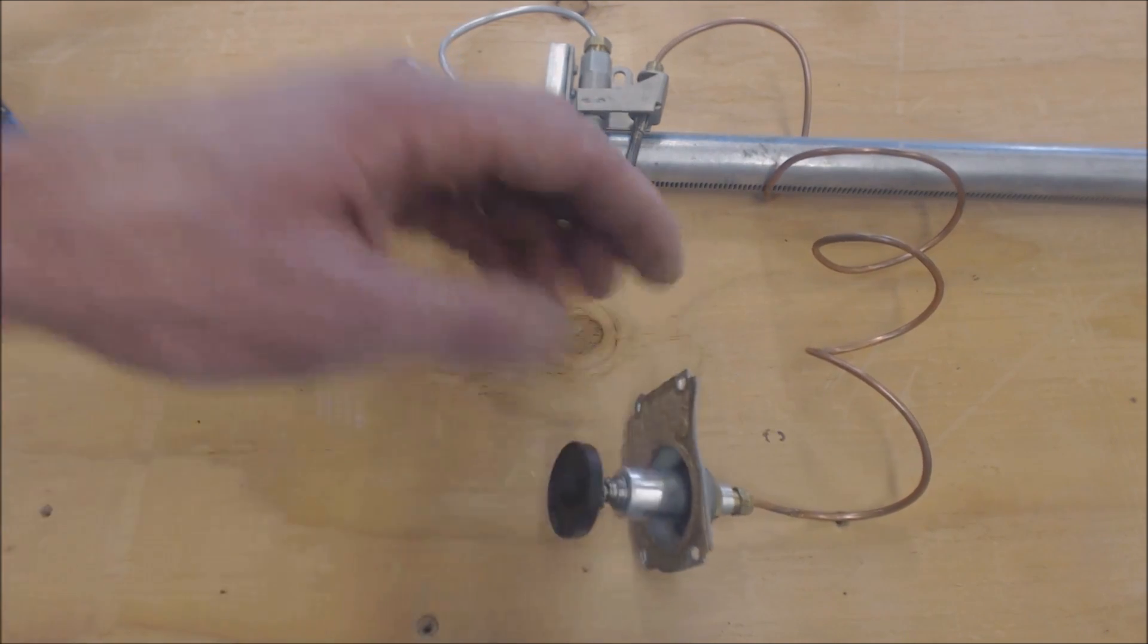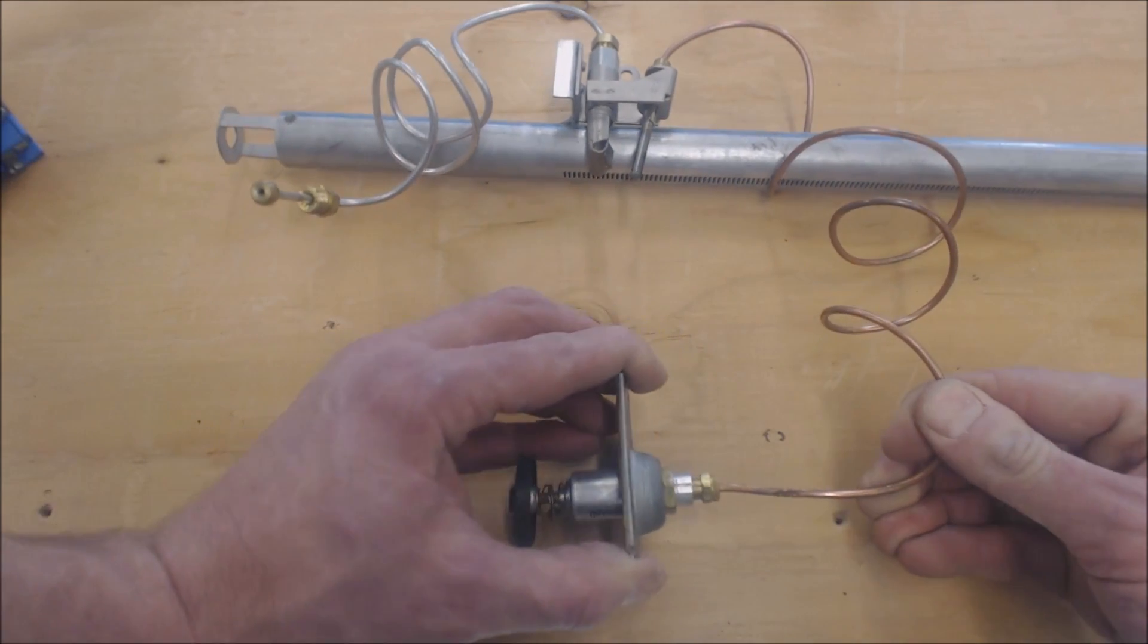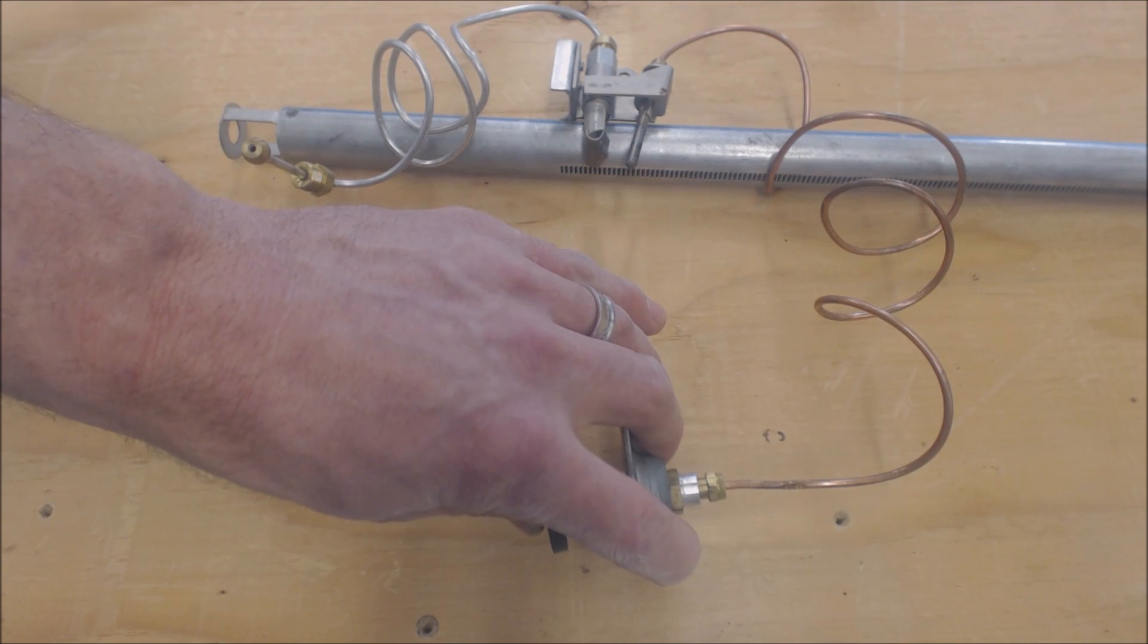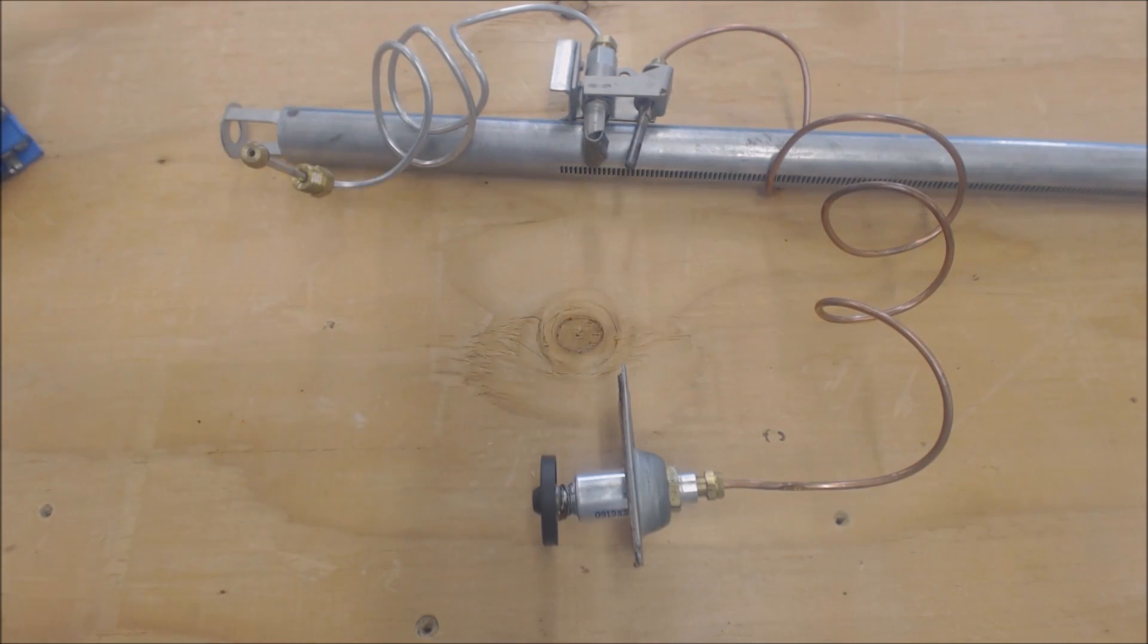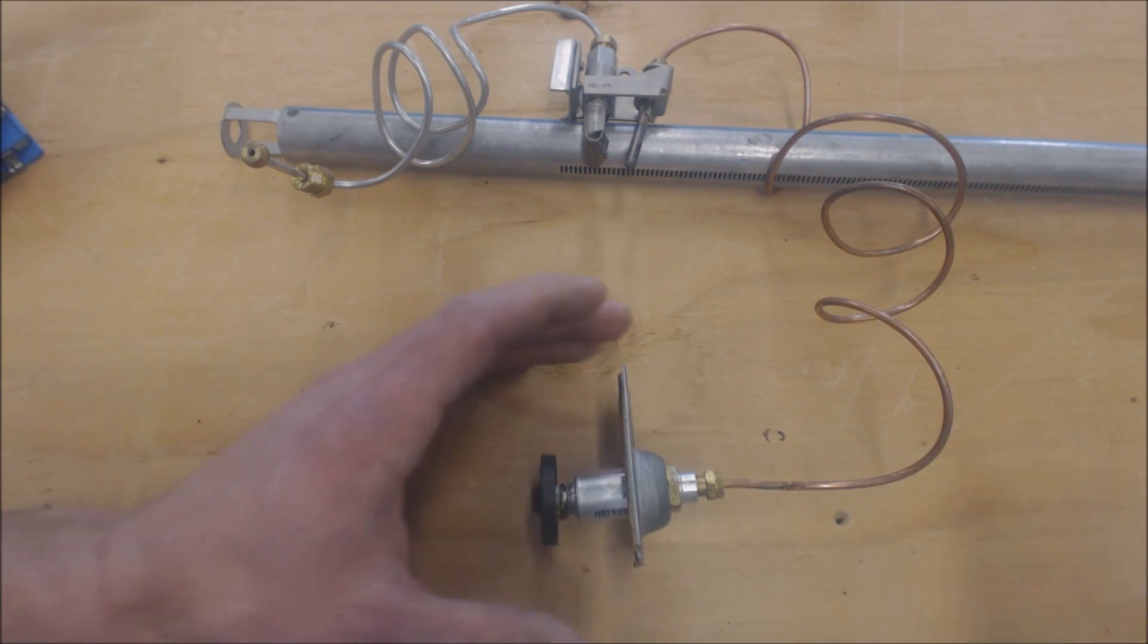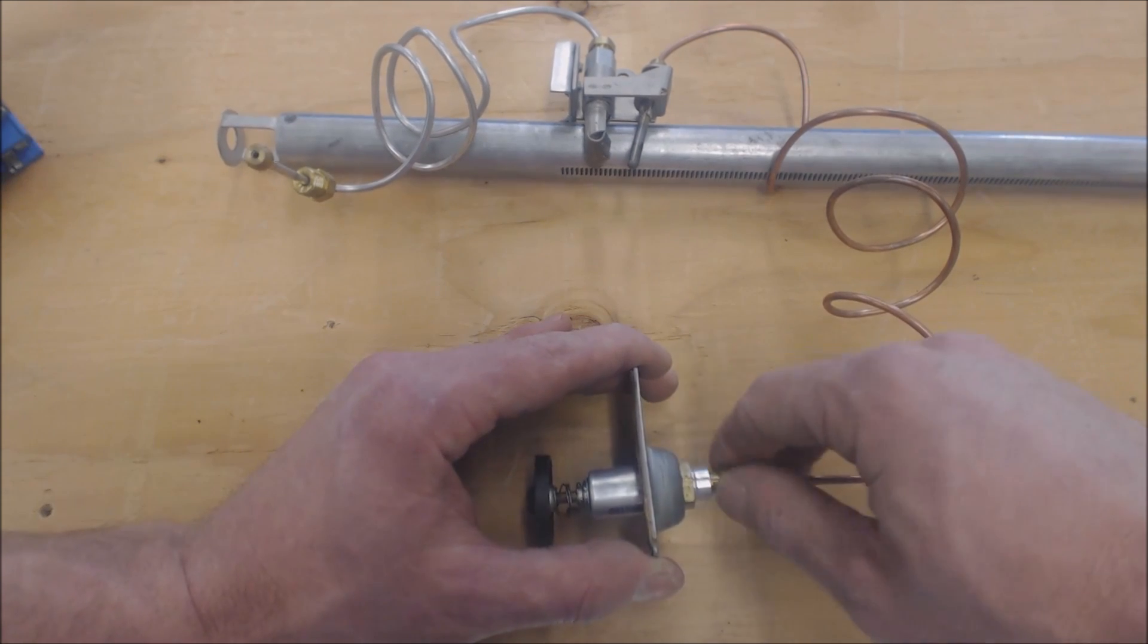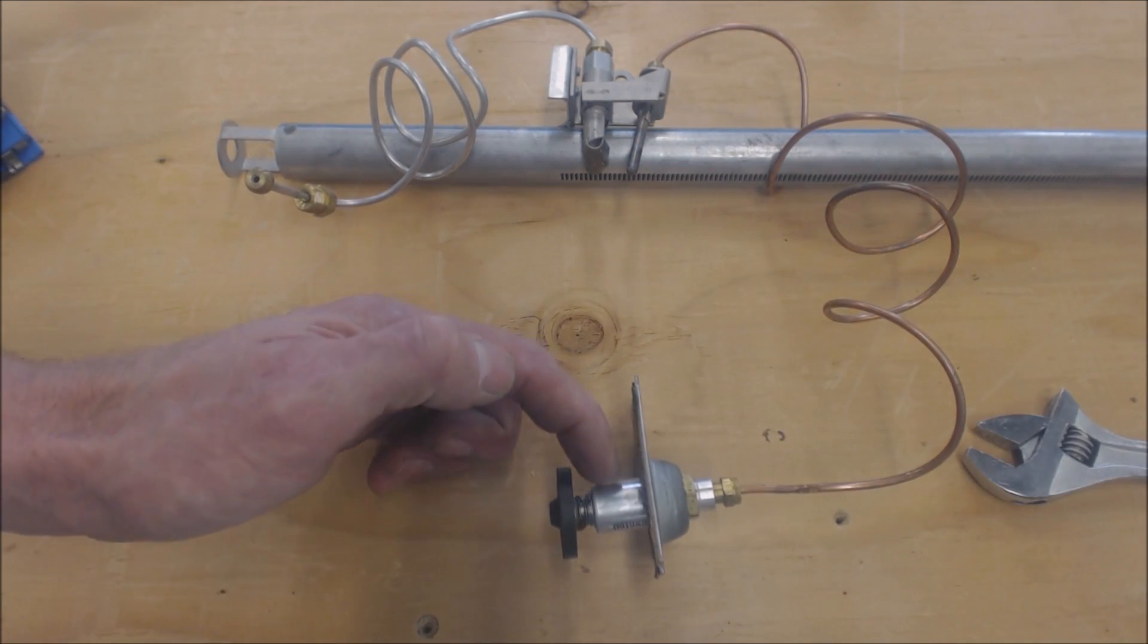We're going to do the same thing again, but this time I'm going to disconnect it here. Now it's holding it again and we're going to disconnect it. You see that? We just loosened it. Let's tighten it again, hold it in, and see how it holds. That's the function of this solenoid along with the thermocouple.